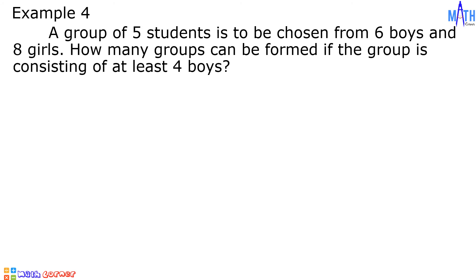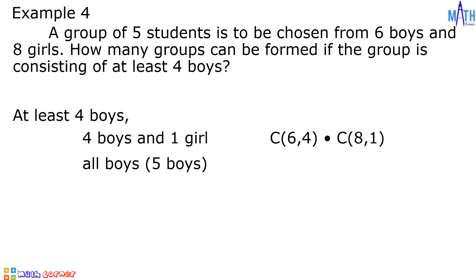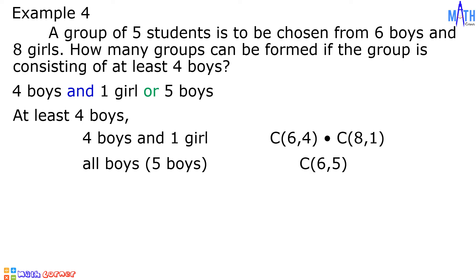Example number 4: a group of 5 students is to be chosen from 6 boys and 8 girls. How many groups can be formed if the group consists of at least 4 boys? If there are at least 4 boys, the group may be formed as 4 boys and 1 girl — that is, the combination of 6 taken 4 at a time times the combination of 8 taken 1 at a time — or as 5 boys and 0 girls. The total number of possible groups is the combination of 6 taken 4 at a time times the combination of 8 taken 1 at a time, plus the combination of 6 taken 5 at a time.